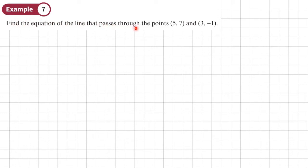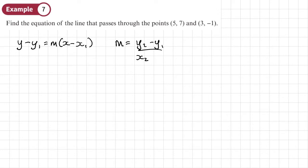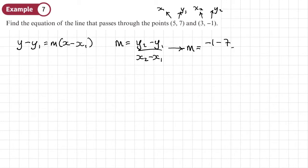Example 7: find the equation of a line that passes through the points (5, 7) and (3, -1). We're still going to use y minus y1 equals m times x minus x1, but first we need m. So we use m equals y2 minus y1 over x2 minus x1. Taking (3, -1) as x2, y2 and (5, 7) as x1, y1: m equals negative 1 minus 7 over 3 minus 5, which is negative 8 over negative 2, giving m equals 4.